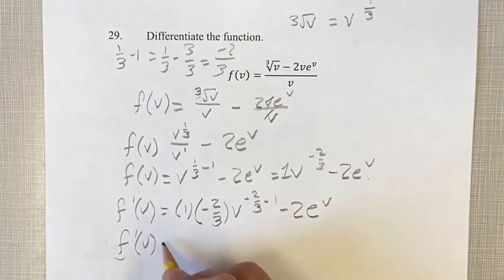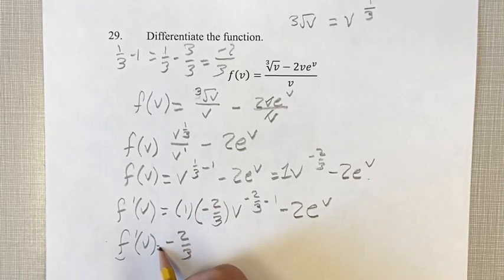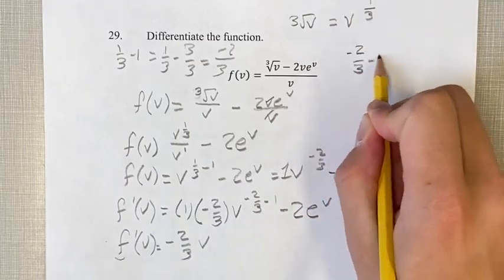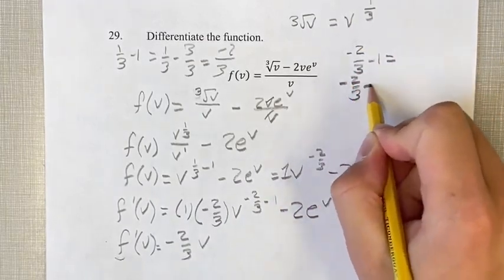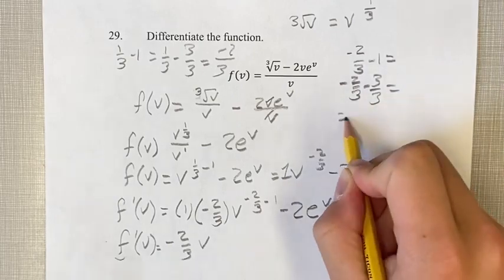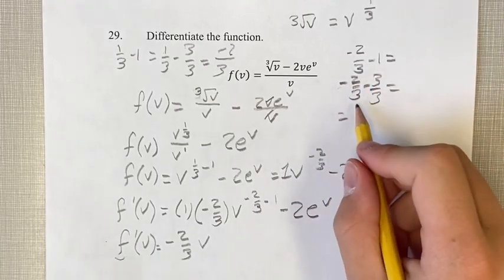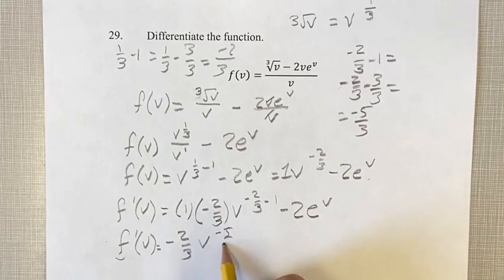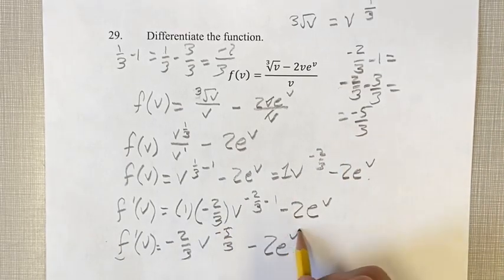Simplifying this, 1 times negative 2 thirds is negative 2 thirds. v to the negative 2 thirds minus 1 is negative 2 thirds minus 3 thirds. Common denominator, minus 2 minus 3 is negative 5 thirds. That's going to be your exponent. Minus 2 e to the v stays the same.